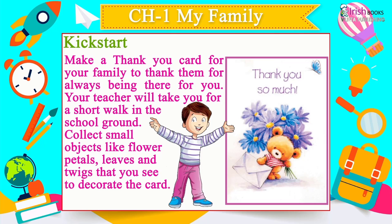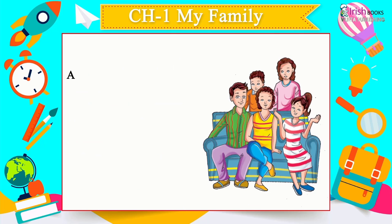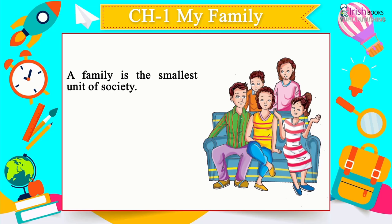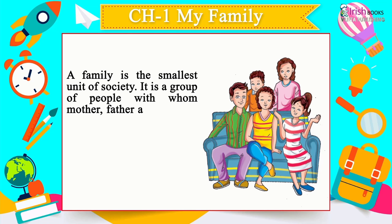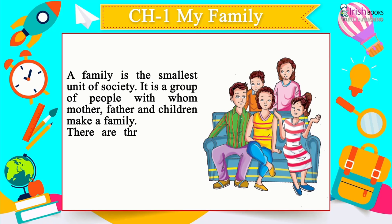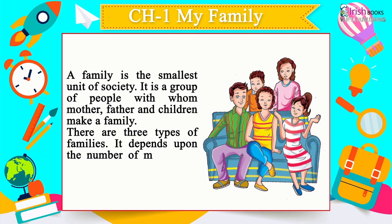A family is the smallest unit of society. It is a group of people — mother, father and children — who make a family. There are three types of families, depending upon the number of members a family has.